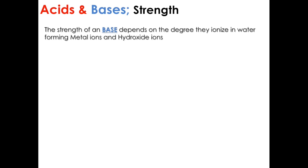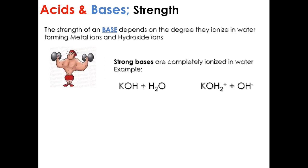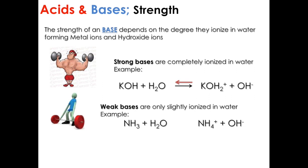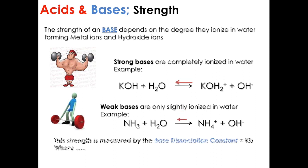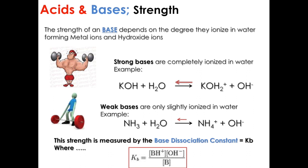The strength of a base depends on the degree they ionize in water, forming metal ions and hydroxide ions. Strong bases are completely ionizing in water, while weak bases are only slightly ionizing in water. This strength is measured by the base dissociation constant, Kb, where Kb equals the product concentrations in equilibrium divided by the concentration of the base in equilibrium.